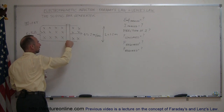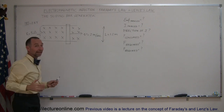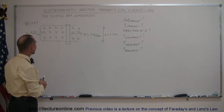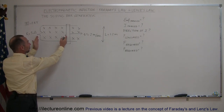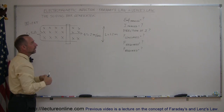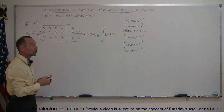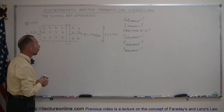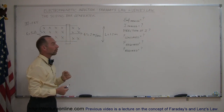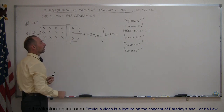The length of the bar from one end to the other between the two wires is 1.2 meters. The questions we could ask are: what is the EMF induced, what is the induced current, what is the direction of the induced current, what is the power consumed by the resistor, how much force is required to move the bar to the right, and what is the power required to move the bar to the right.